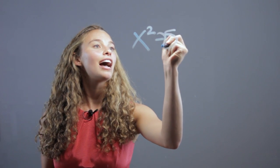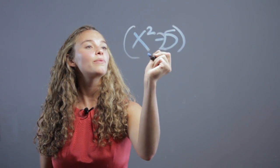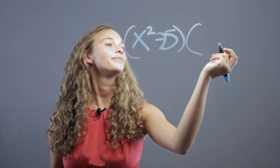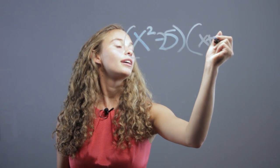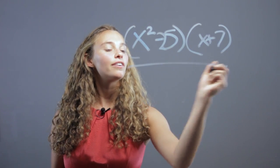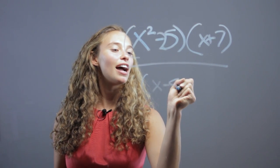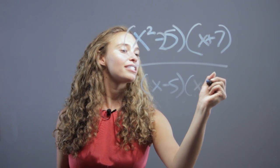We're going to have x squared minus 25 over x plus 7, over x minus 5 and x plus 7.